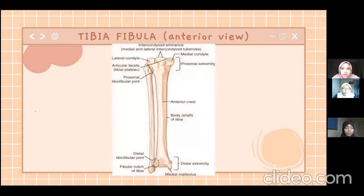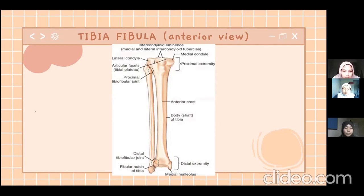This is tibia and fibula from anterior view. These bones are located between the knee and also the ankle. From the inner part, it is the tibia, which is thicker than the fibula. The joint connecting these two bones is called the proximal tibiofibular joint, and from the distal part it is called the distal tibiofibular joint. At the distal part we can see that the tibia is leaning on the fibula.